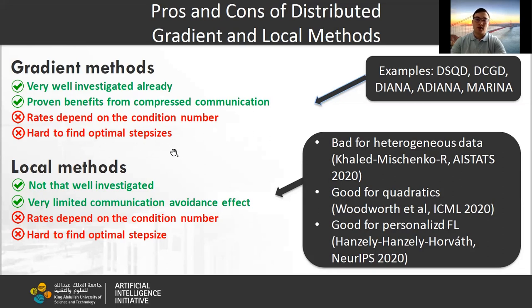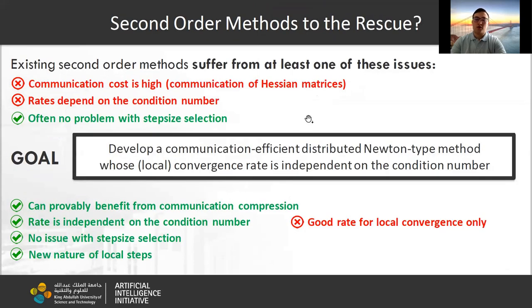In addition to gradient-type methods, there are some local methods, which have some additional problems like limited communication avoidance effect, for example. Our desire is to solve these issues.